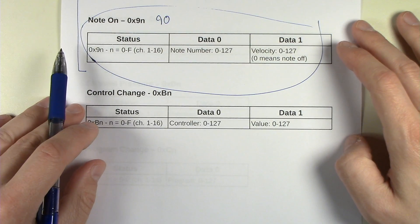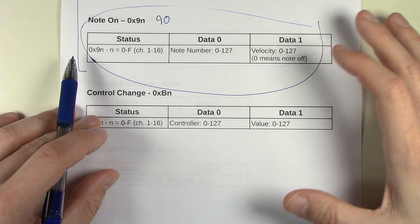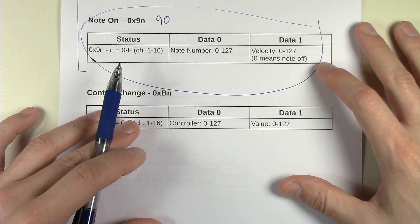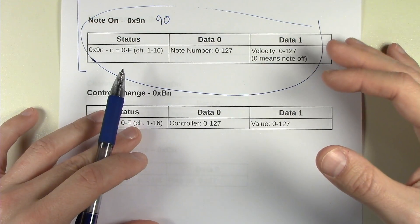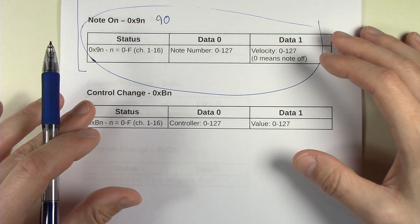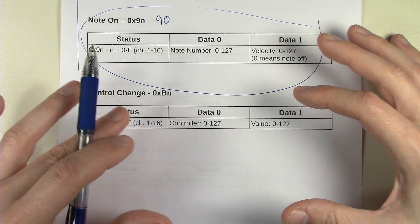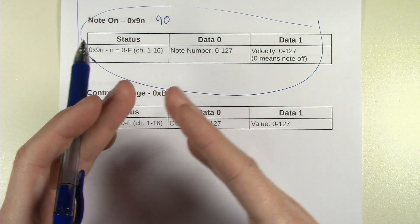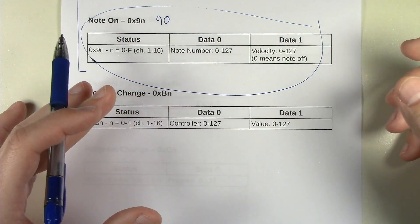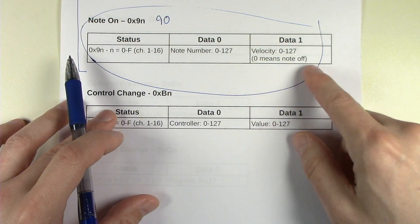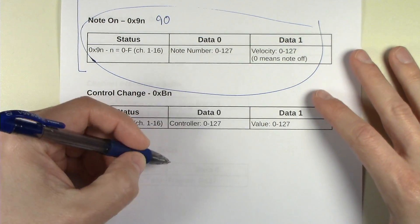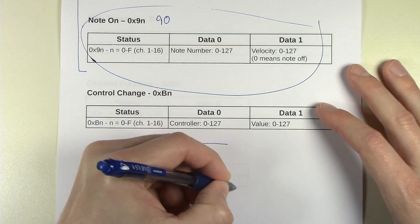One thing about control change that's interesting is that there's no spec that says how fast you have to send these. So if you're turning your knob and it's generating a lot of data inside the keyboard, it might not send all that data out to the MIDI port because it would otherwise saturate the connection and maybe other messages wouldn't be able to be sent. So there is some sort of, you have to test each product to see what's the resolution in terms of time when you're actually turning a knob. How fast does it actually send updates?